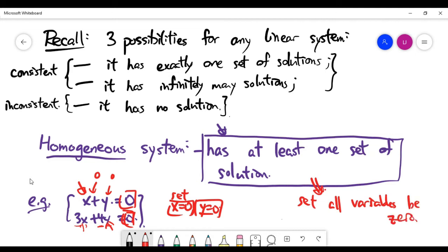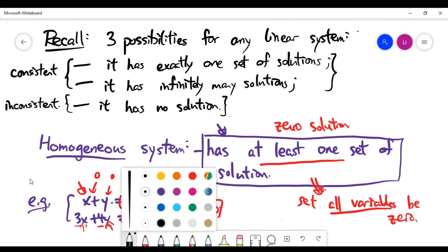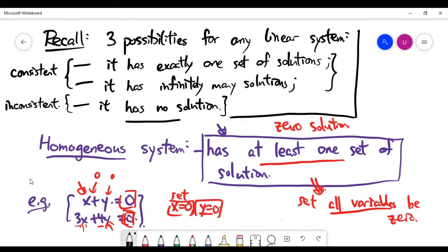The solution that I claim any homogeneous system must have is basically the zero solution, in the sense that you can set all variables to be zero. Let's come back to my notes in black at the top here.